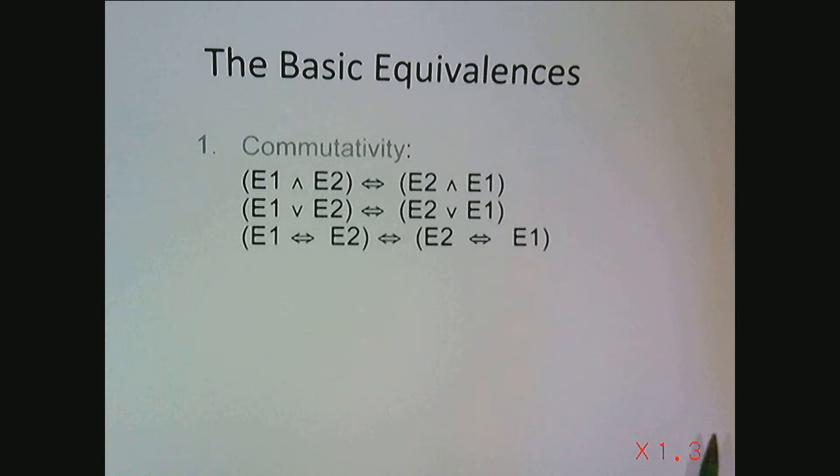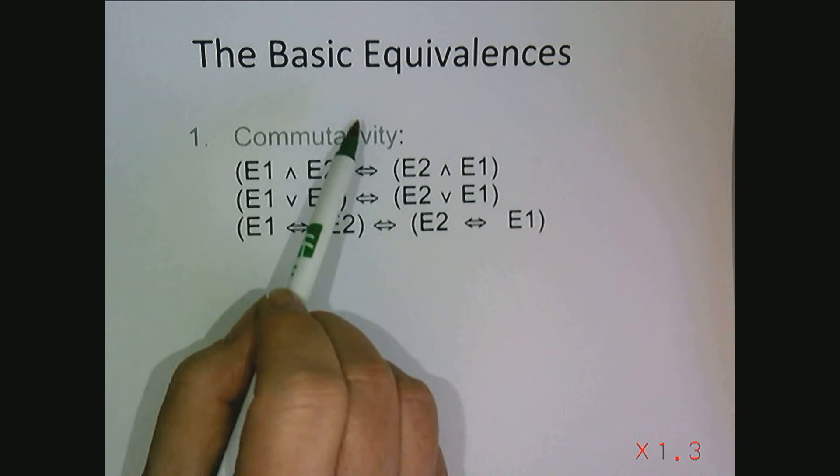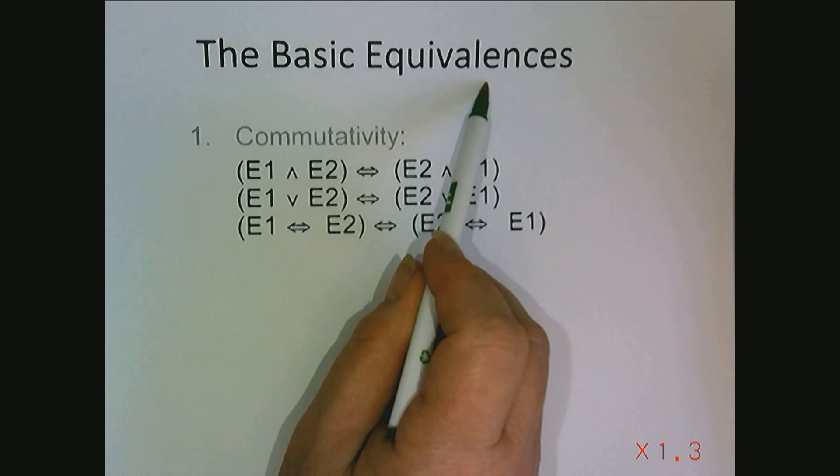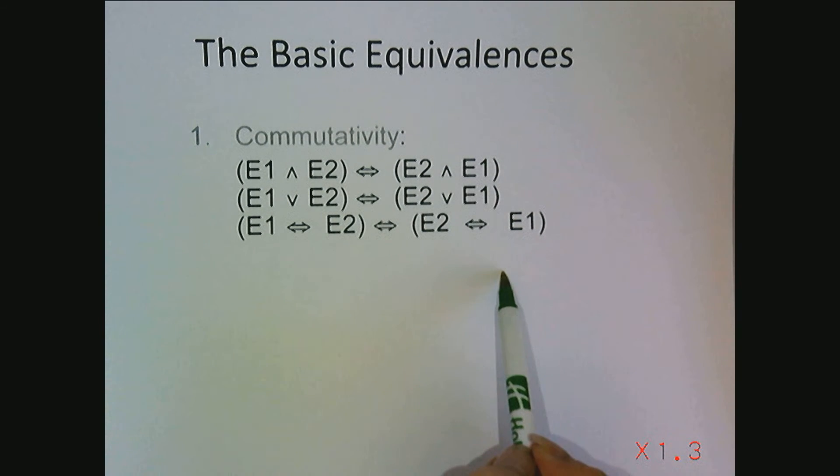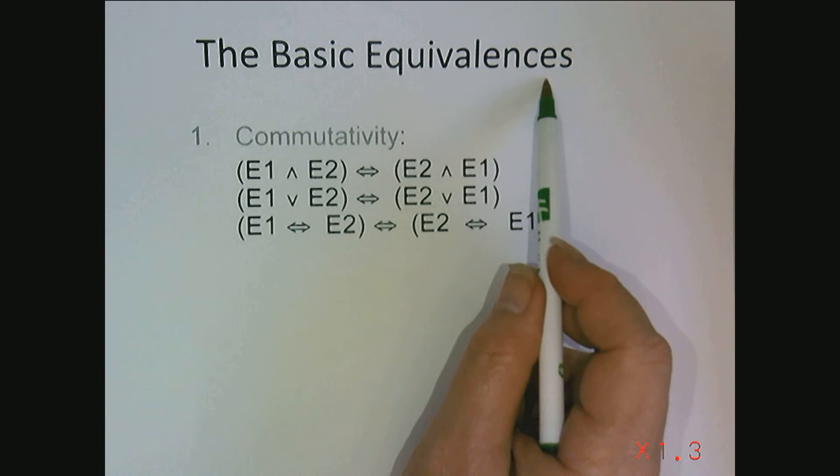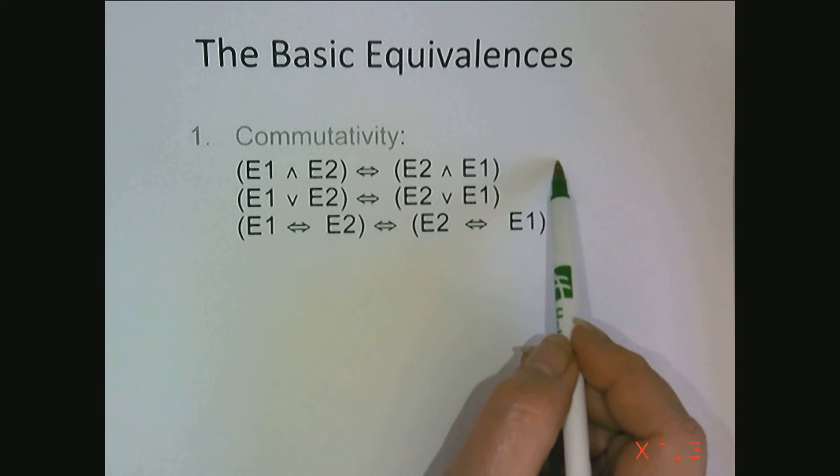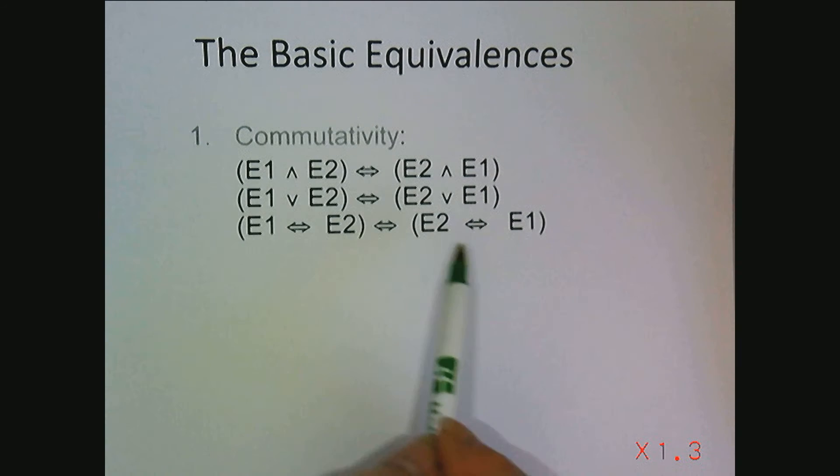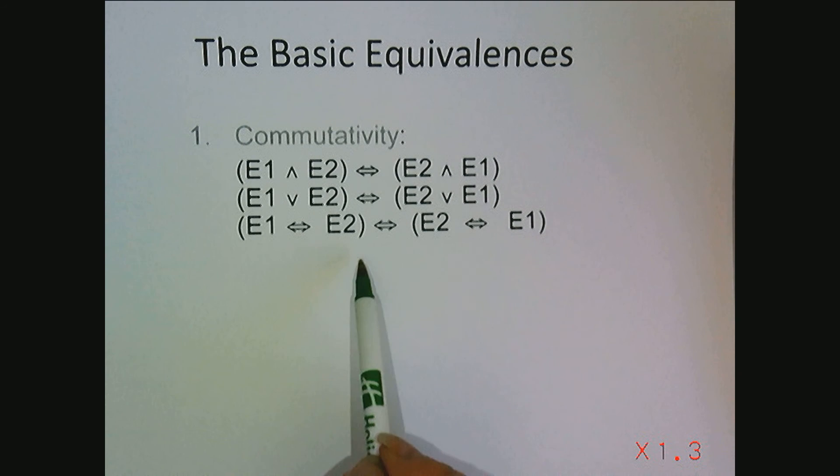To prove these we could actually use truth tables. In fact, all of our basic equivalences could be proven with truth tables. Once we have the basic equivalences we can prove other predicates by manipulating using these basic equivalences. But to start we could prove these if we wanted to using our truth tables.